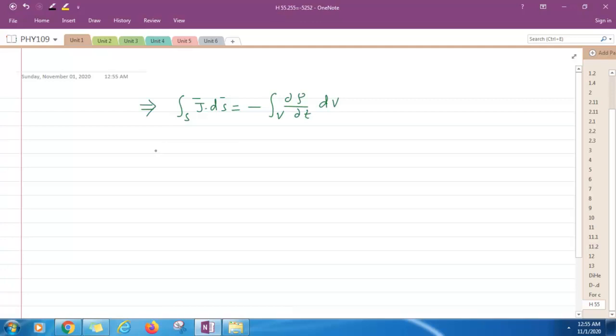Now this equation you can write like this. Volume integration divergence J dv is equal to minus volume integration curly rho by curly t dv. Here I have used Gauss divergence theorem.